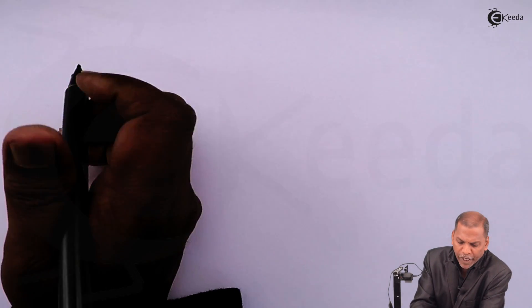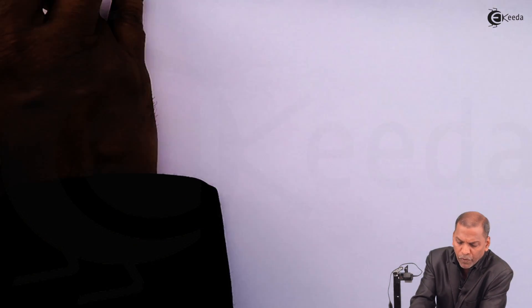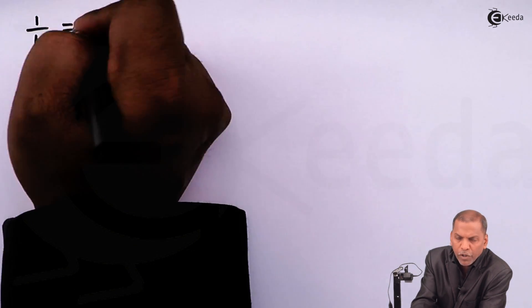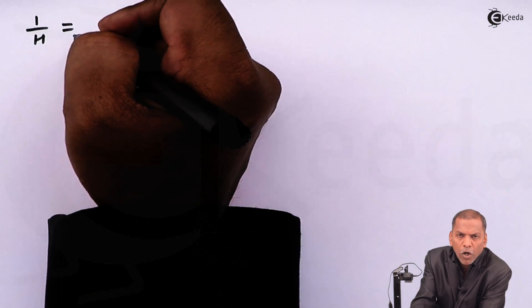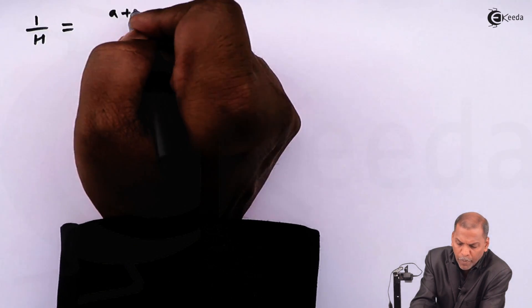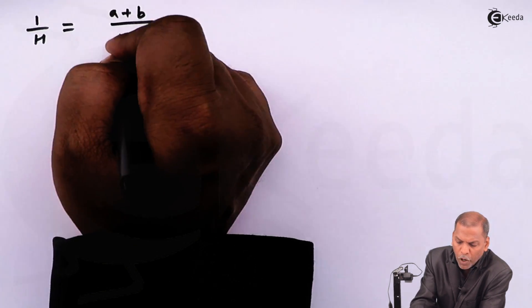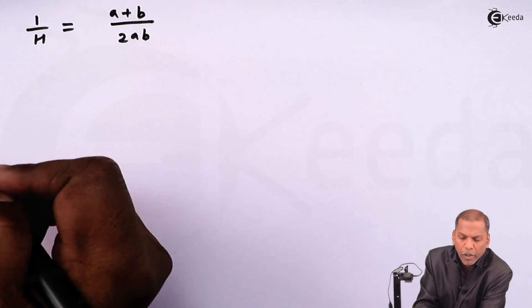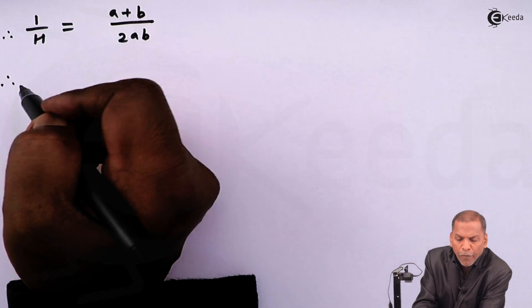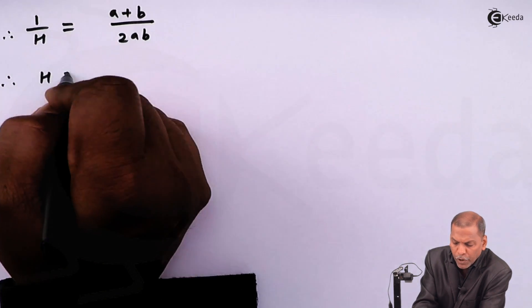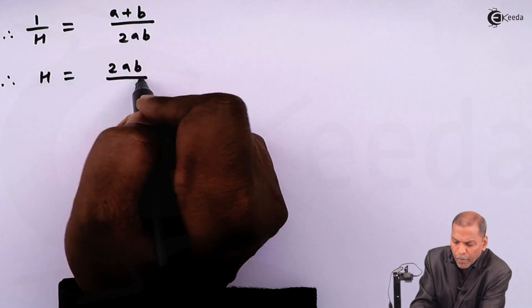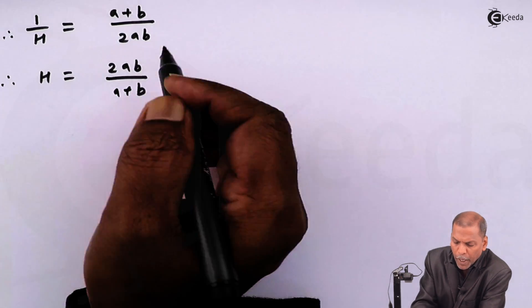On further simplification, we get 1/H = (a + b) / (2ab), by cross multiplying the right-hand side. And therefore, H = 2ab / (a + b).